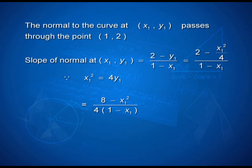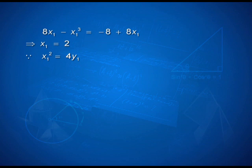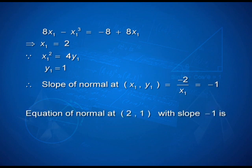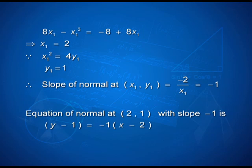Since (x₁, y₁) lies on the curve x² = 4y, we are ready to simplify and equate with −2/x₁. Cross-multiplying and simplifying gives x₁ = 2. Once I have x₁, using x₁² = 4y₁ I get y₁ = 1. Therefore, the point at which the normal is constructed has coordinates (2, 1), and the slope of the normal, which was −2/x₁, takes the value −1. With the point and the slope known, the equation of the normal is y − 1 = −1(x − 2). Simplifying, the equation of the normal is x + y = 3.